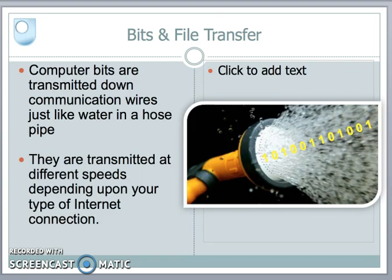Computer bits are transmitted down communication wires. Just like water in a hose pipe, my bits arrive one after each other — they arrive sequentially, one bit followed by the next. They don't spray out; they arrive in a little train. Of course, we are all connected to the internet at different rates, at different speeds. Our broadbands are all different depending upon where we live.